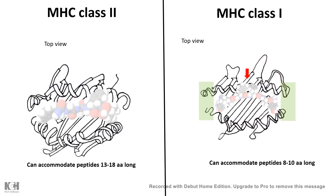In MHC class 2 molecules, it can accommodate 13 to 18 amino acid long peptide antigens because the two sides of the groove are open, so the extra portion of the peptide can hang from that. Class 2 MHC molecules therefore have a bigger capacity for antigens.